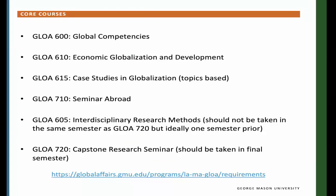Core Courses. Listed here are the Global Affairs Core Courses as part of the master's program. You should begin the program with the introductory course, GLOA 600. Depending on how many credits you plan to take, you can also enroll in GLOA 610 and/or GLOA 615. The sections of GLOA 615 are topics-based, so make sure the topic is of interest to you. If none of the topics interest you, you can wait until the next semester. You can also take GLOA 615 again with a different topic to count towards your declared specialization credit. The next progression is GLOA 710, the seminar abroad — more on this later. GLOA 605 should be taken in your second-to-last semester, as it prepares you for your final semester in which you will need to apply to graduate and enroll in GLOA 720.